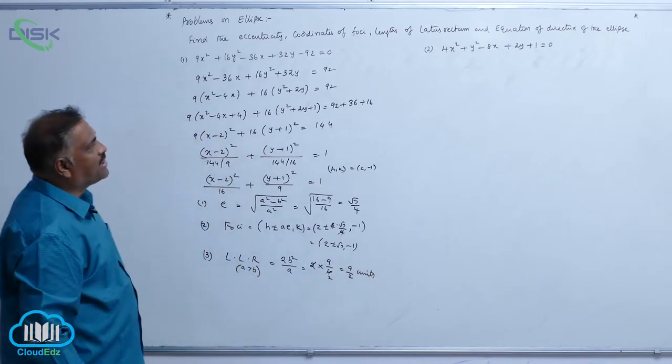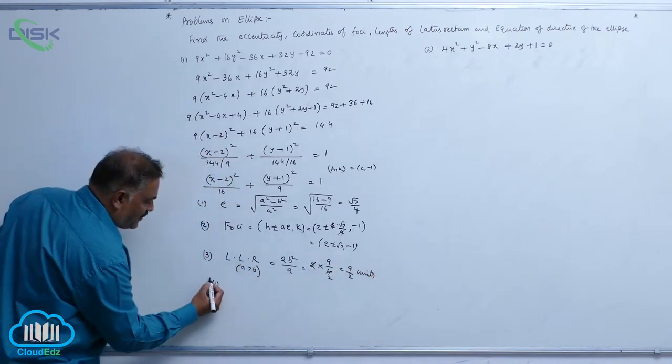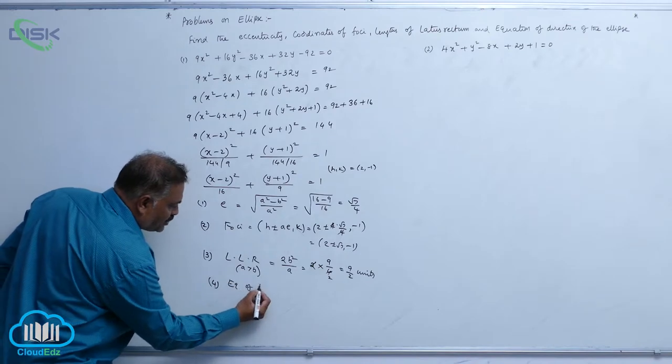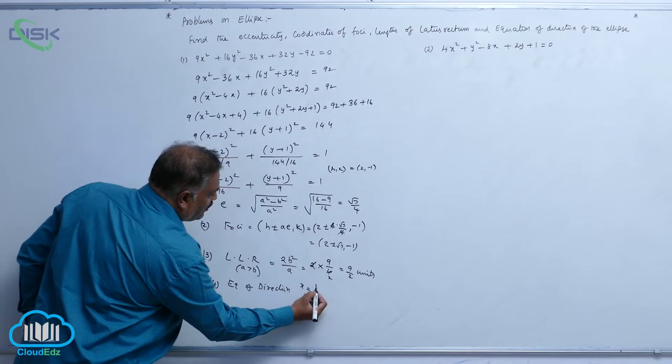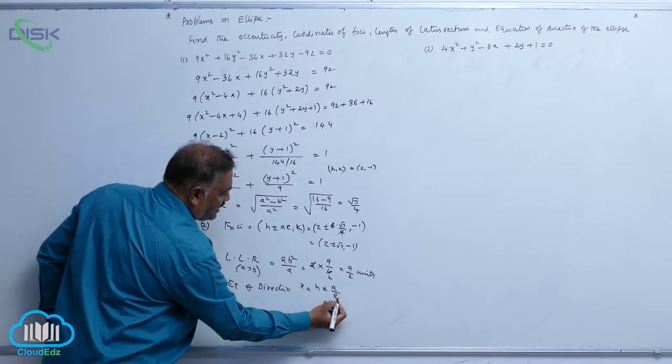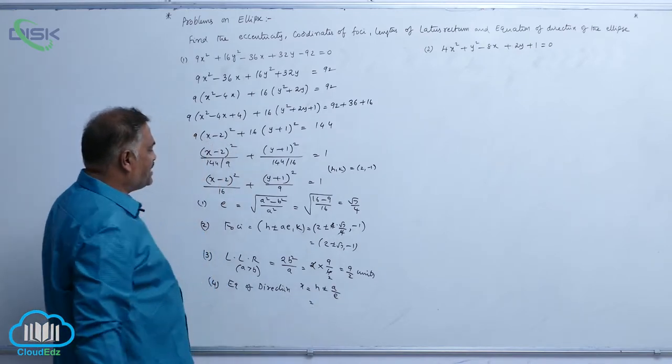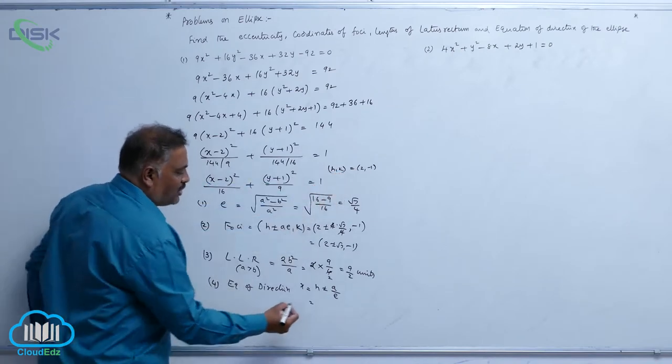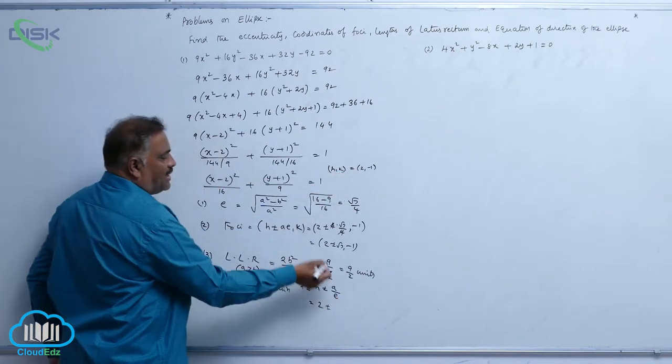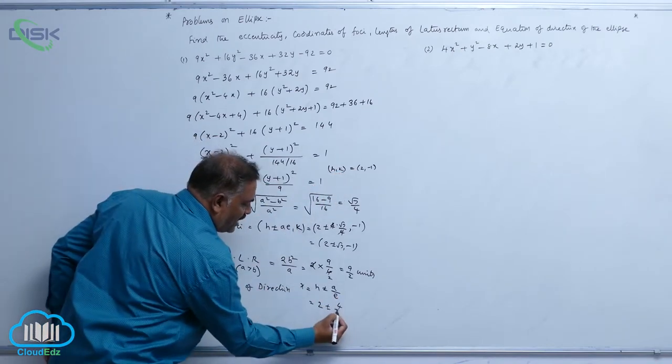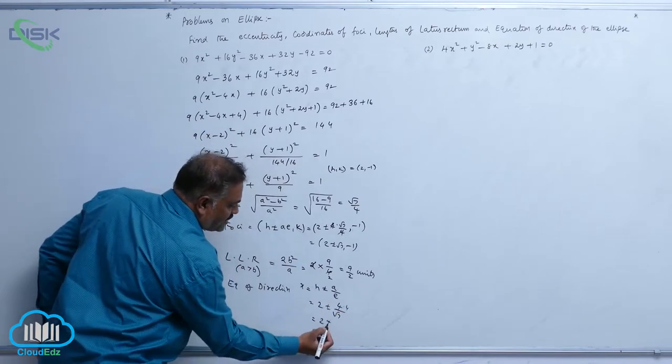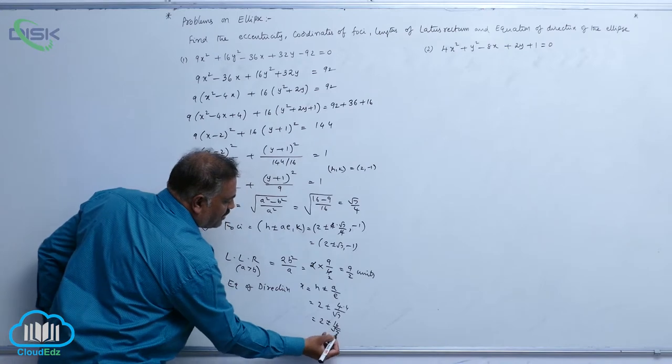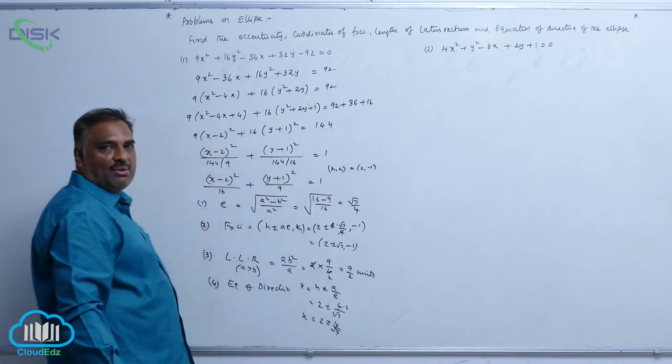Now coming to last one, equation of directrix. So equation of directrix is given by x is equal to h plus minus a by e. h means, here again, 2 plus minus, a value is 4, e value is root 7 by 4, that is 2 plus minus 16 by root 7. No need to simplify this equation.